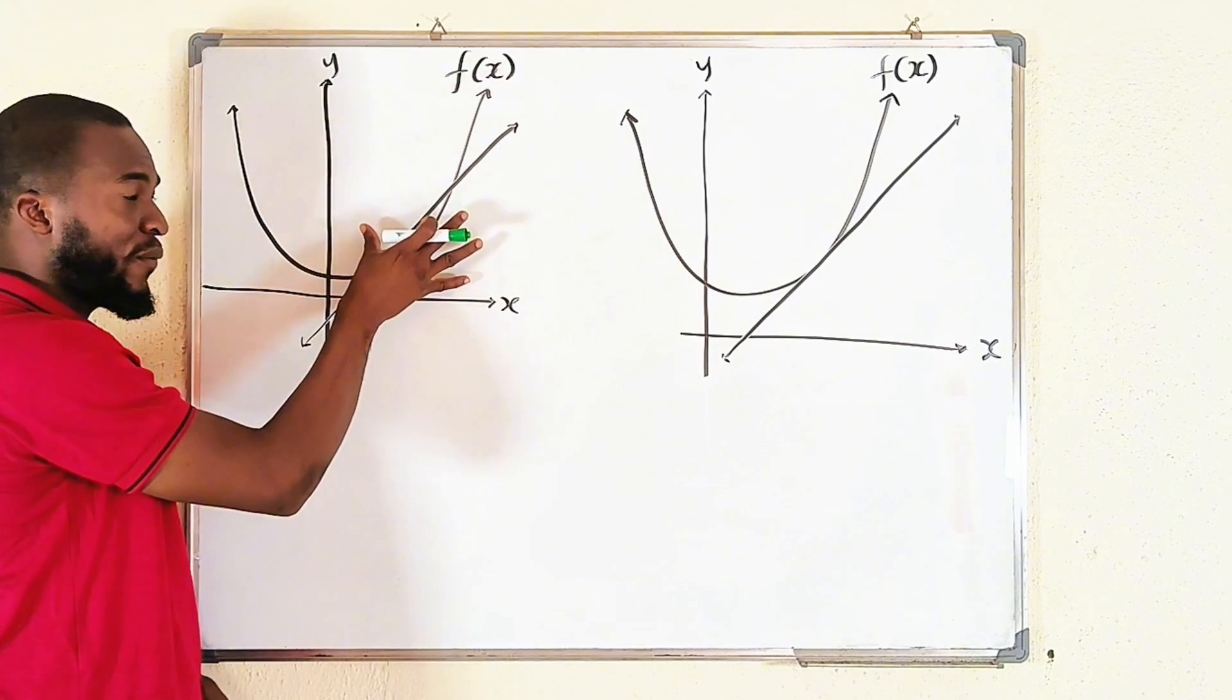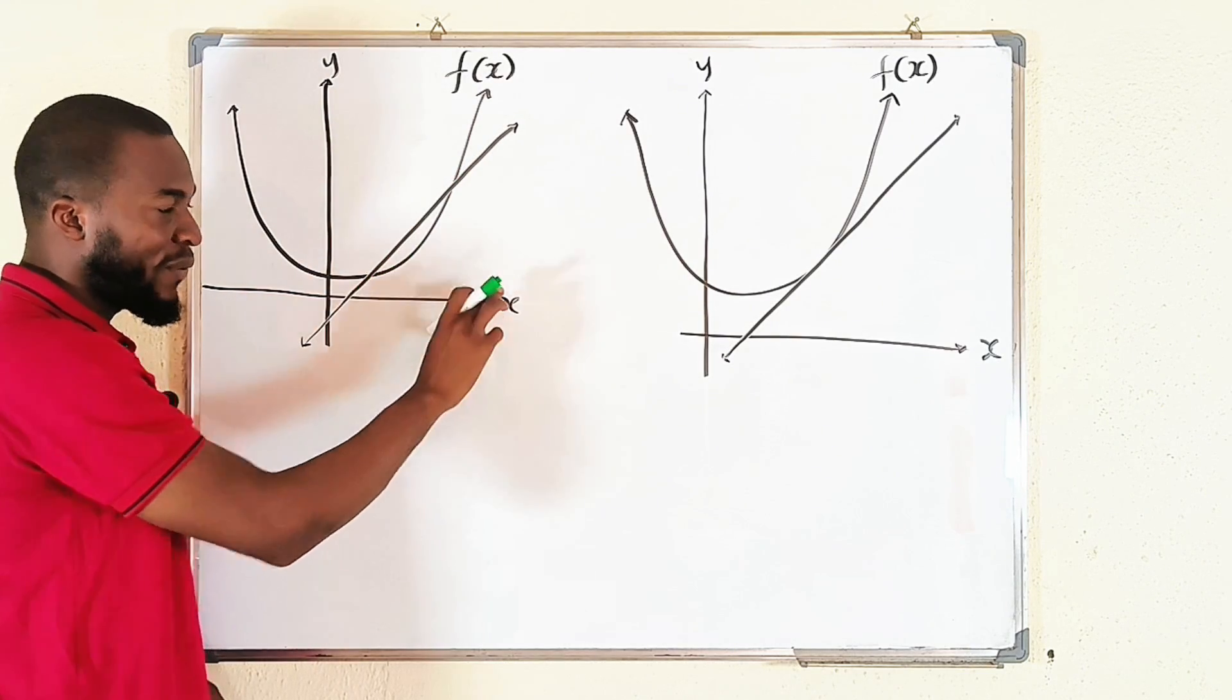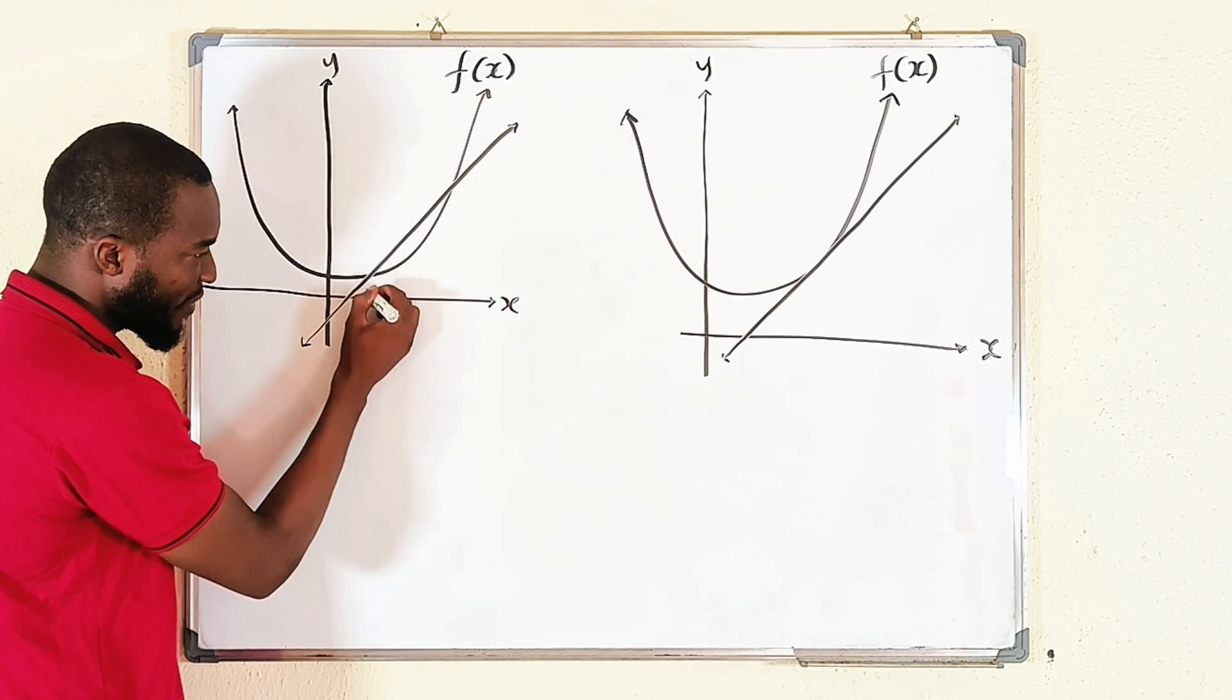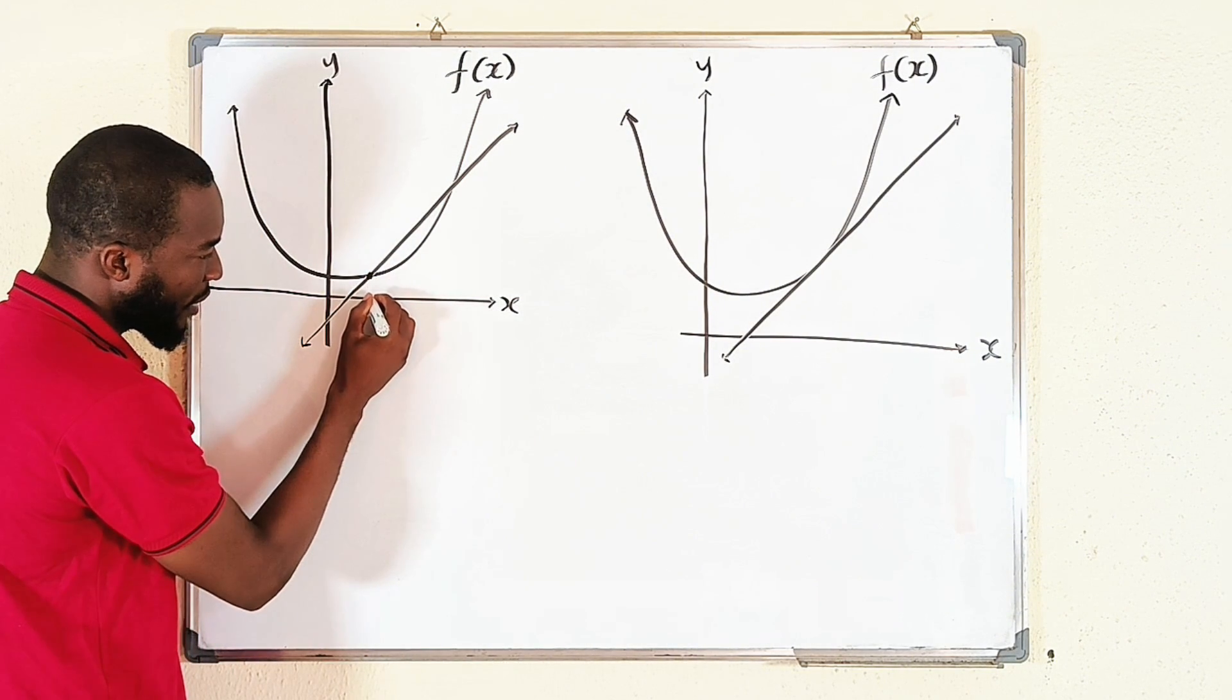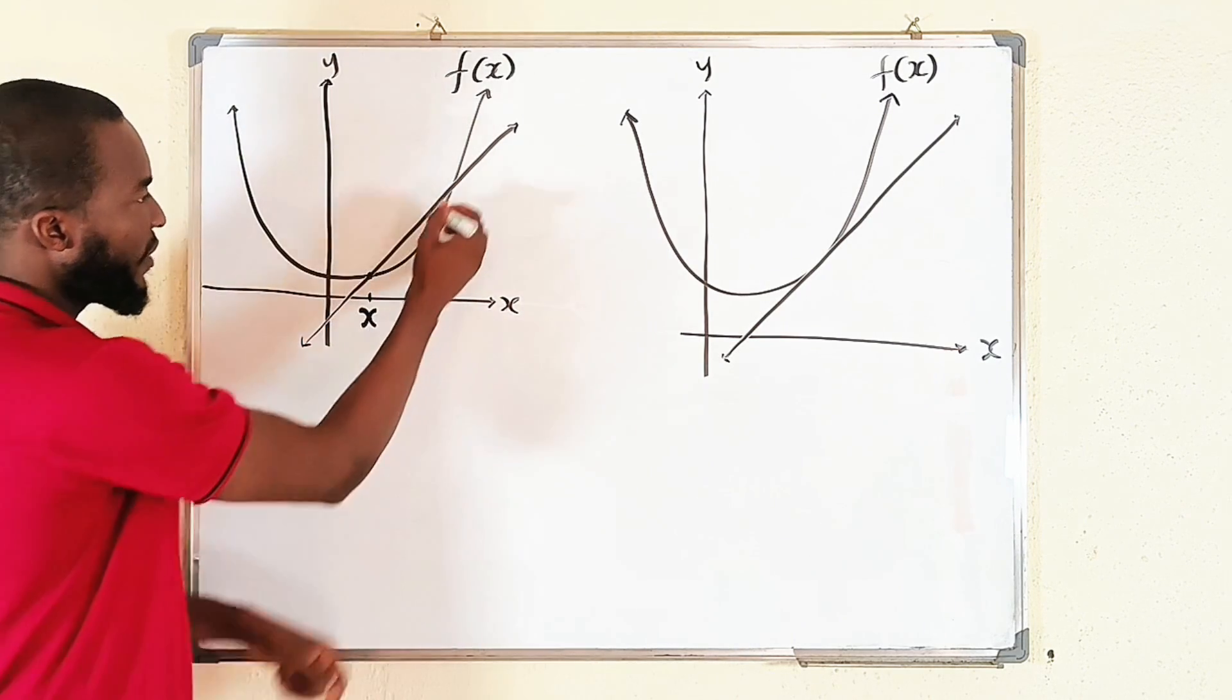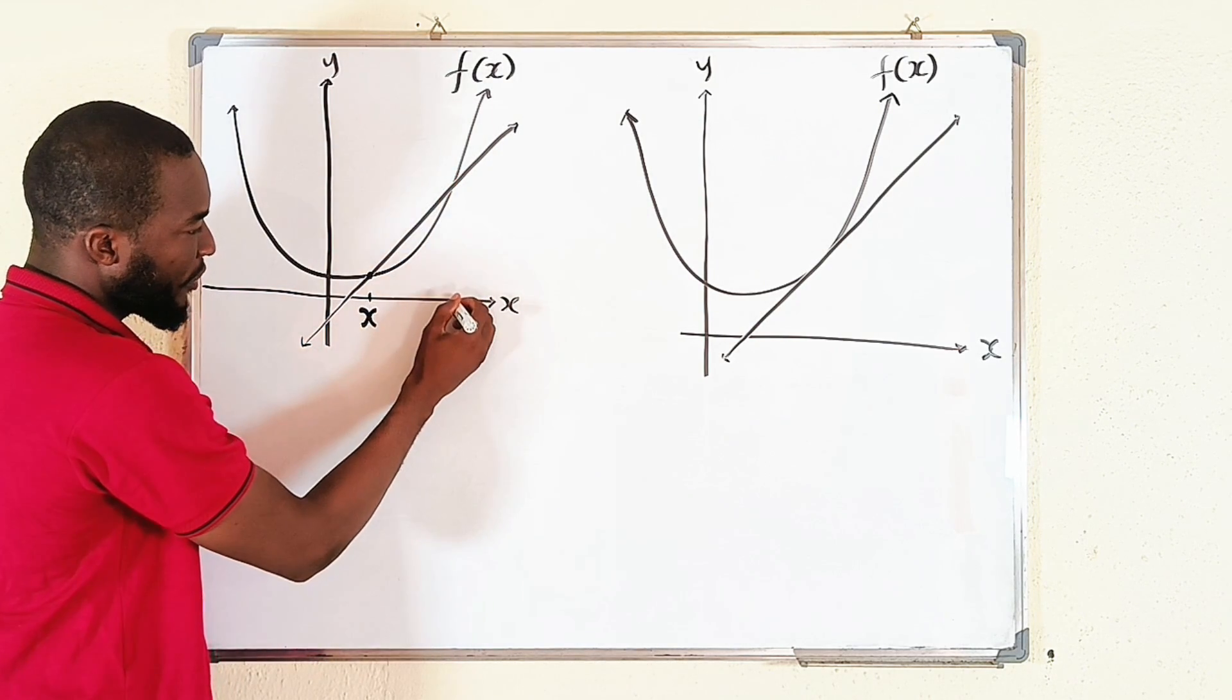You know, this is the first quadrant. We expect all of these values to be positive. So this is an arbitrary value of x. Let me start with this particular point. Let's assume this point is x. What about this point? It should be here.